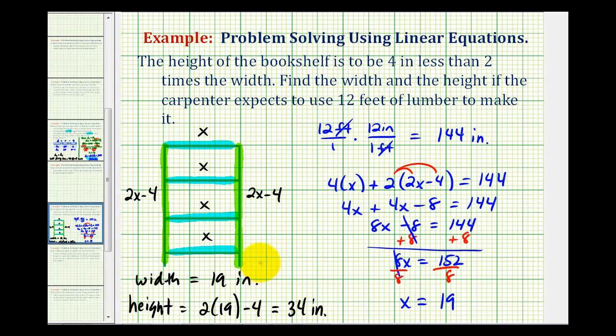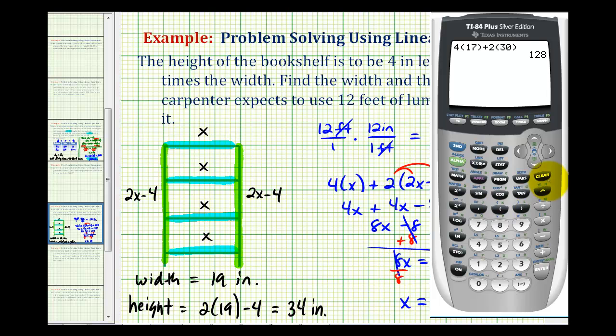Now let's go ahead and verify this on the calculator. If we have 4 widths at 19 inches, and 2 heights at 34 inches, this should equal 144 inches. And it does. So our solution is correct.